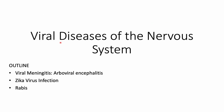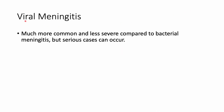Now we'll discuss viral diseases of the nervous system, including viral meningitis, Zika virus infection, and rabies. Viral meningitis is far more common than bacterial meningitis but also far less severe. Serious cases can occur, but they are much less frequent and less likely when the infection is caused by a virus compared to bacteria.